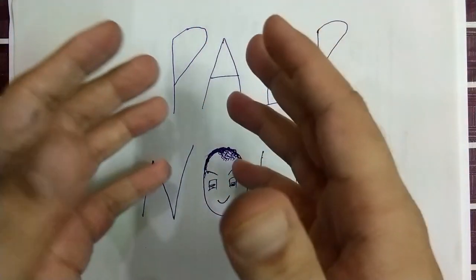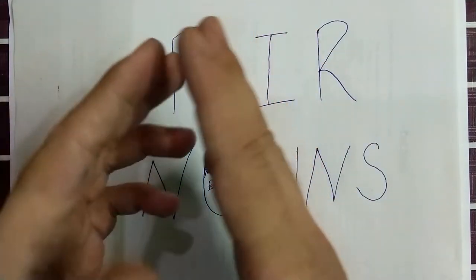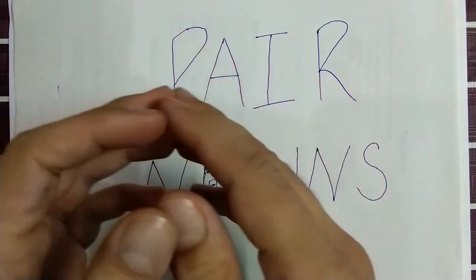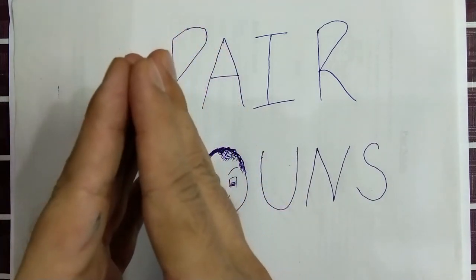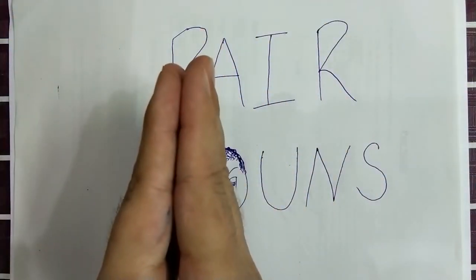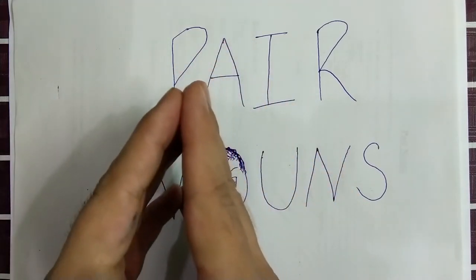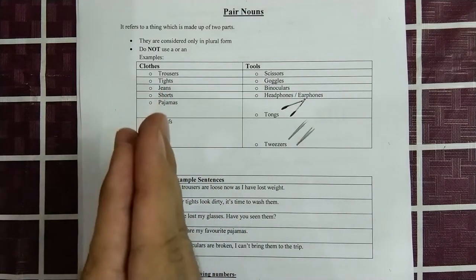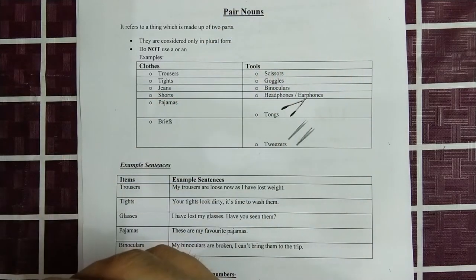For example, I have two hands — if I'm using them together, that makes a pair. Pair nouns are those nouns which are made up of two things and cannot be separated. They have to be used together; if not used together, they may not be of any use. A pair noun refers to a thing which is made up of two parts.